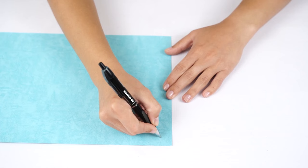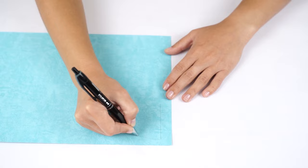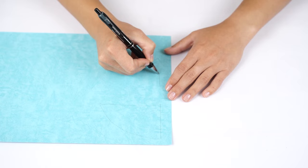Next, on blue paper, draw two elongated quadrants, or fish fins, one longer than the other. Cut them out.